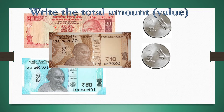Here the notes are not given in order, but we should always start adding from the highest value note. The highest value here is 50 rupees. So: 50 plus 20 is 70; 70 plus 10 is 80; 80 plus 2 is 82; 82 plus 2 is 84. The total value is 84 rupees.